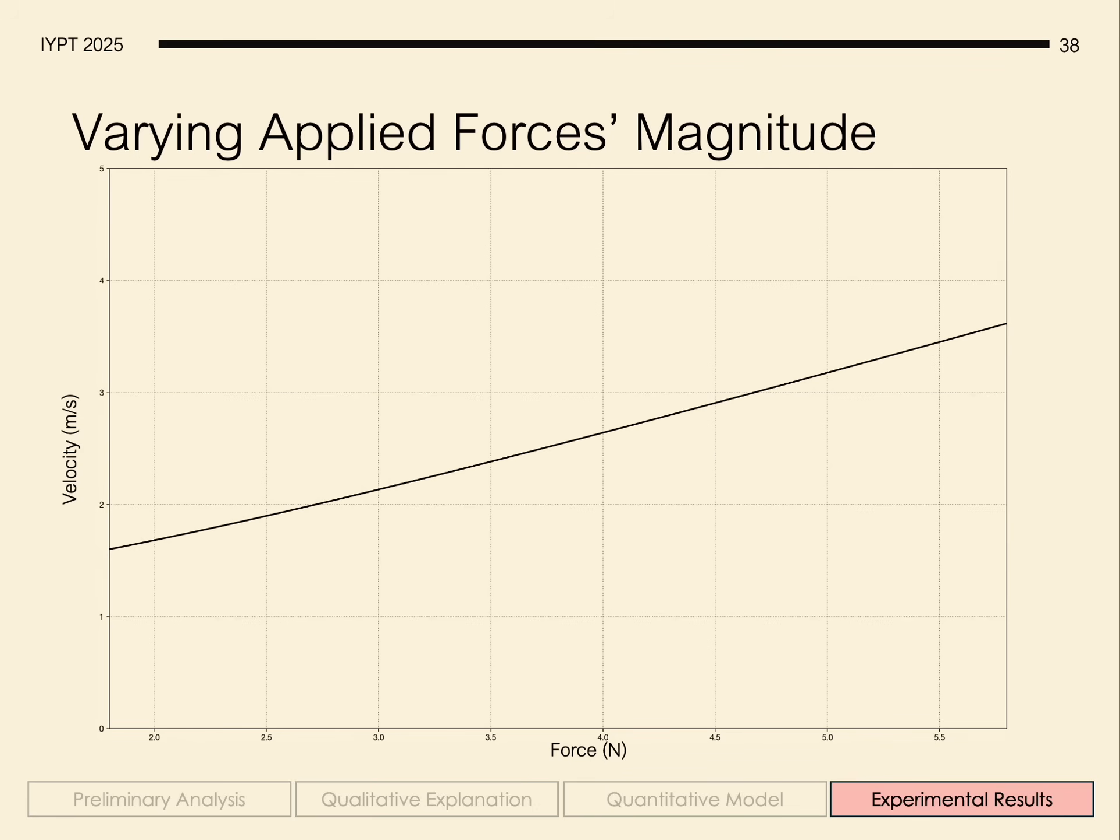While we don't have direct experimental results here, because these would be needing to be obtained directly for yourself in the international competition, we were able to solve the model that we proposed from the conservation of energy and the simplified Euler-Bernoulli beam model. And by looking at the effect of varying the size of the forces, we see that as the size of the force increases, the velocity increases as well.